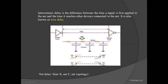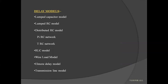Those parasitic elements are the resistance and capacitance. Due to these parasitic elements, we are facing the delay issue. This delay can be calculated by using some delay models. Those delay models are: the lumped capacitor model, the lumped RC model, and the distributed RC model. In the distributed RC model, we have two networks: the PI-RC network and the T-RC network, differentiated based upon their structure.